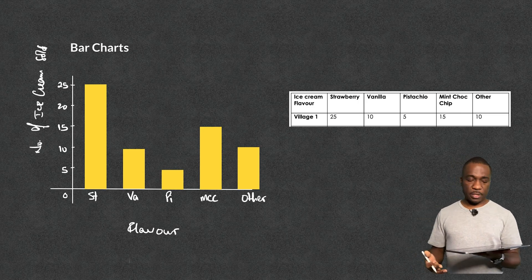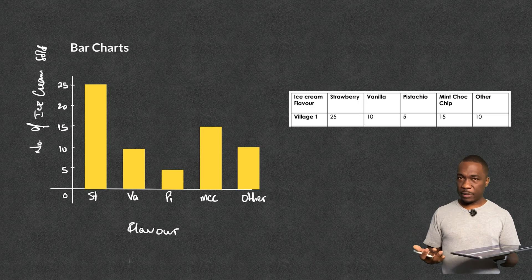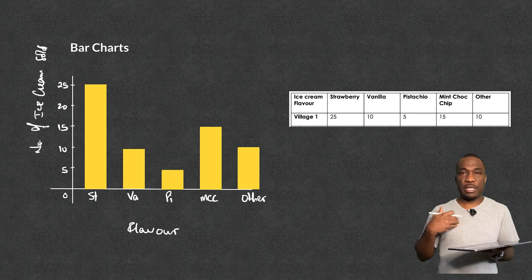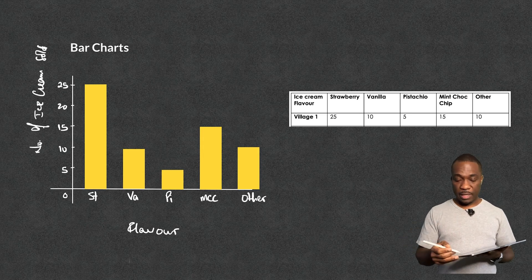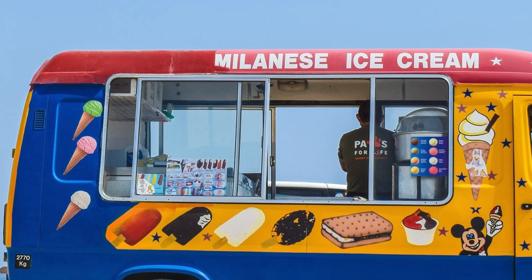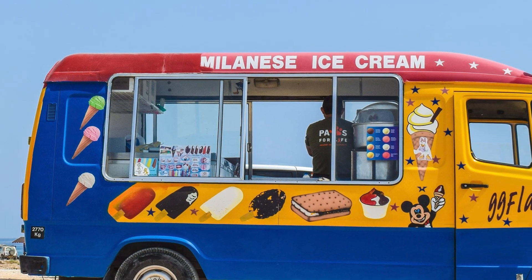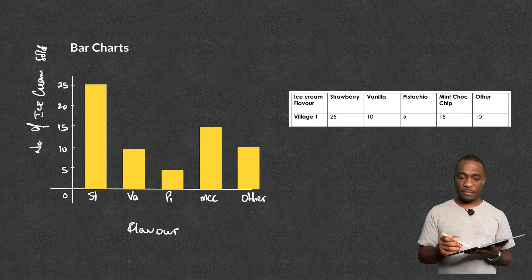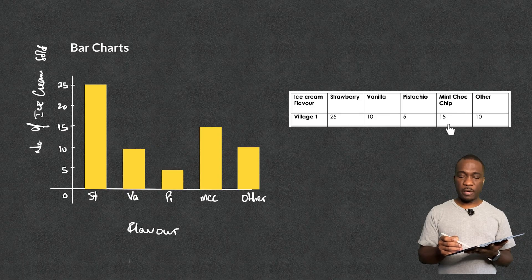Now, now that we've got the bar chart drawn, and we've got it all labeled up and everything like that, what information can we gather from this? So let's say I am the guy who is selling ice cream in this particular village. Well, I noticed that every time I come to the village, loads of people buying strawberries. That's the most favorite one. Then the second favorite would be the mint choc chip.